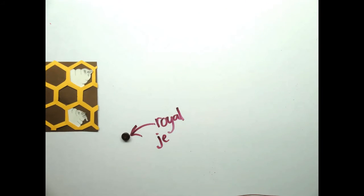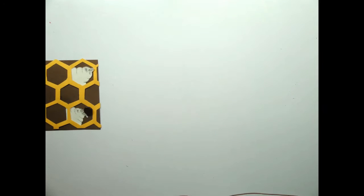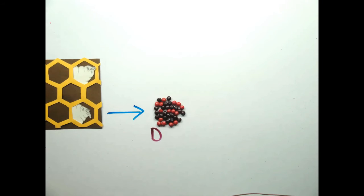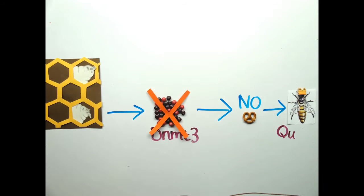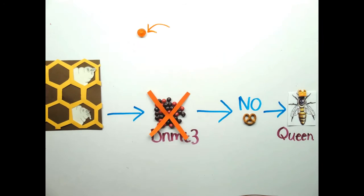In summary, when larvae are fed royal jelly, the DNMT3 enzyme is silenced, which prevents the methyl group from binding to the DNA and results in queen bee development.